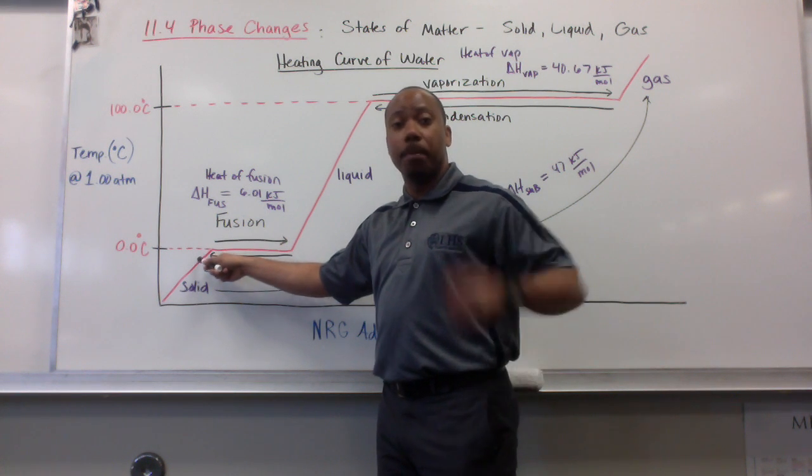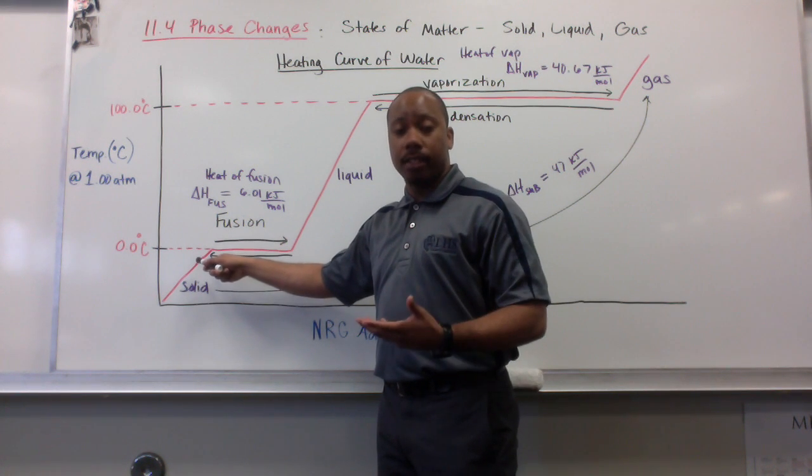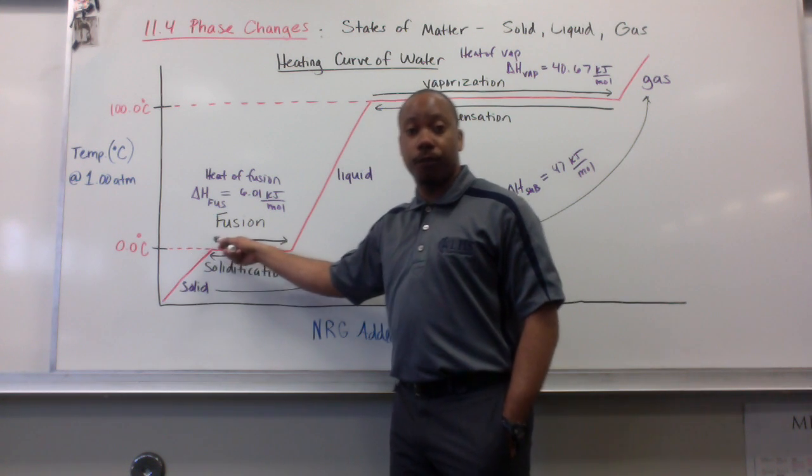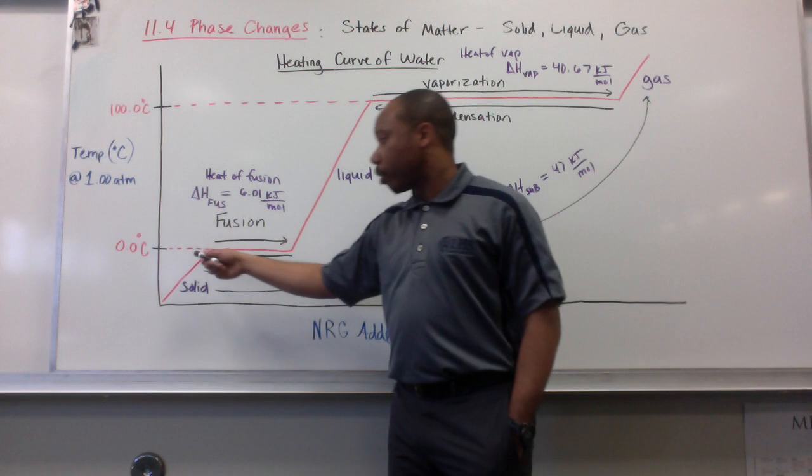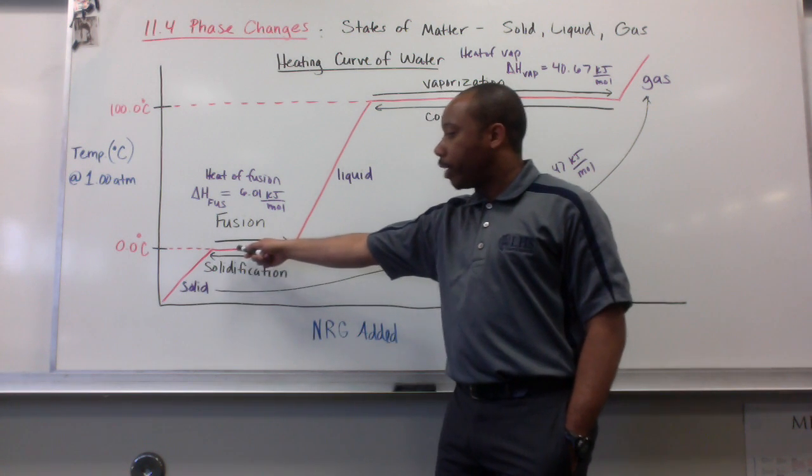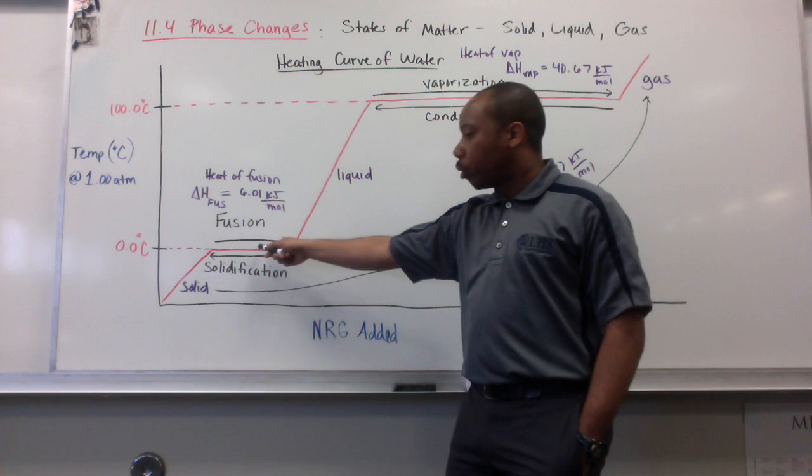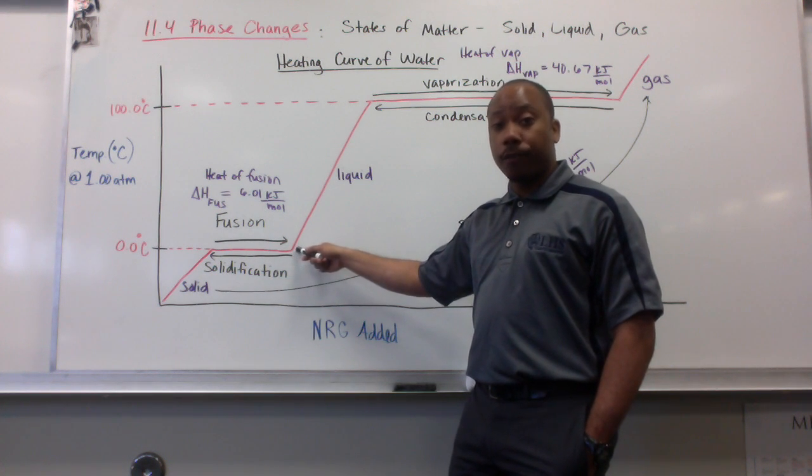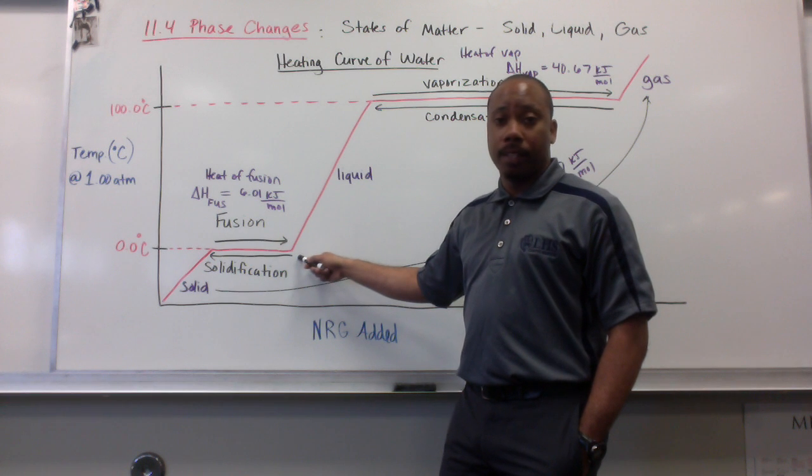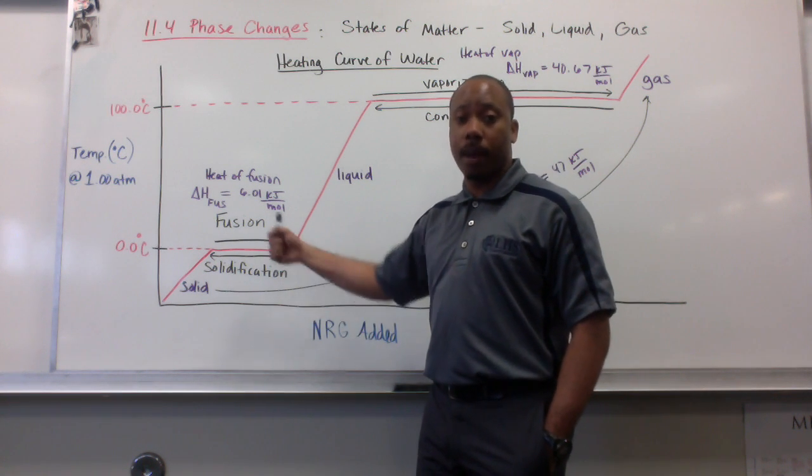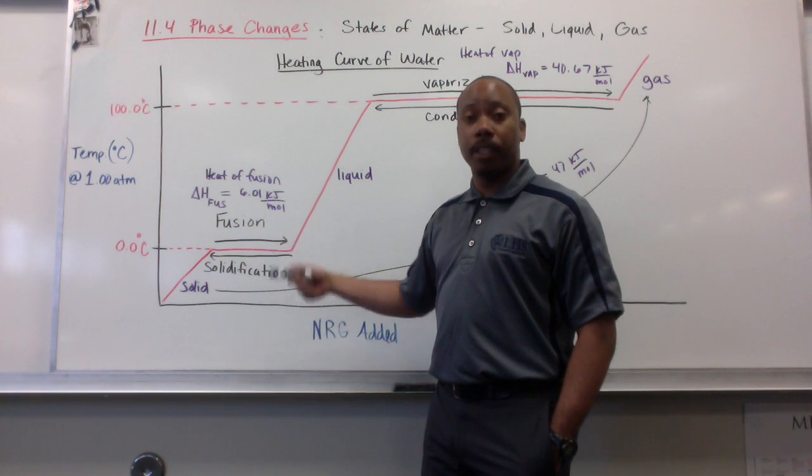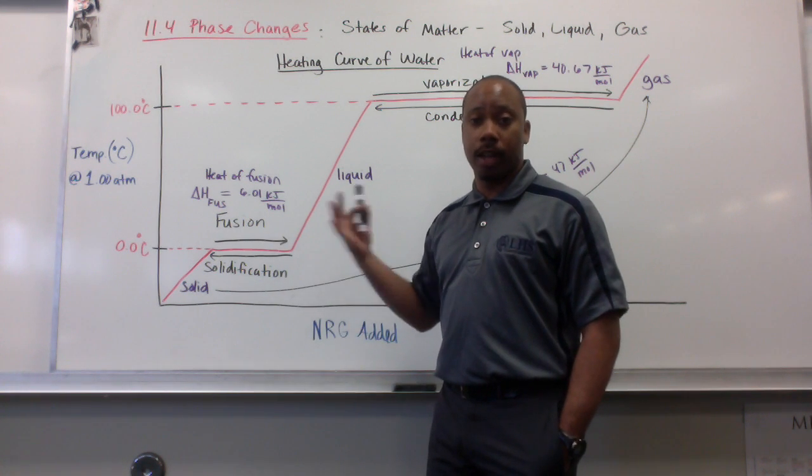We get to zero degrees Celsius. At that point, that is the melting point of ice at standard pressure. At that point, it goes through a process called fusion. We call that melting. So it goes through fusion. As you notice, this line here no longer increases. It goes straight. So it's a plateau. So during fusion, during melting, the temperature stays at zero degrees Celsius because the energy is not being used to increase the temperature.